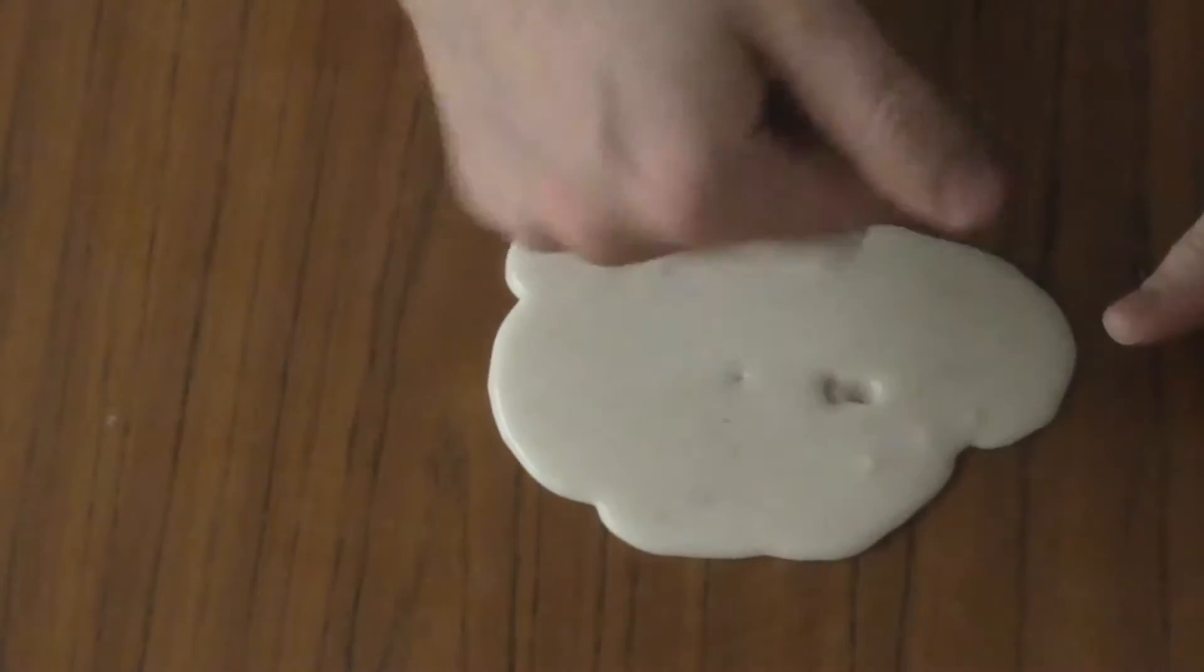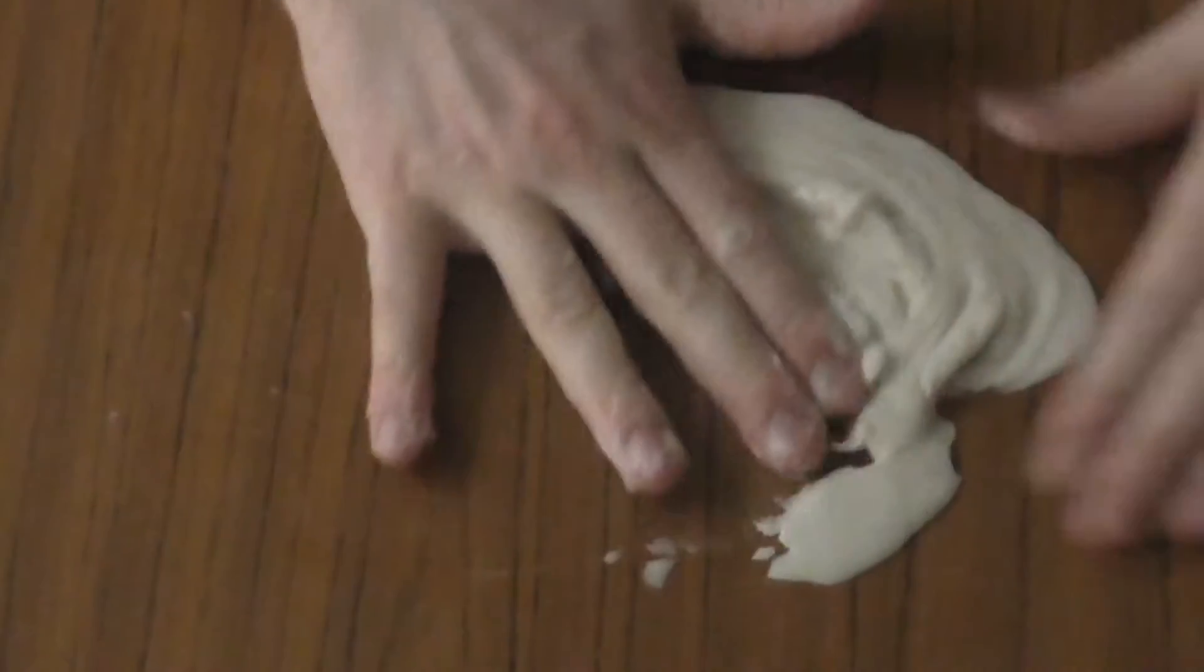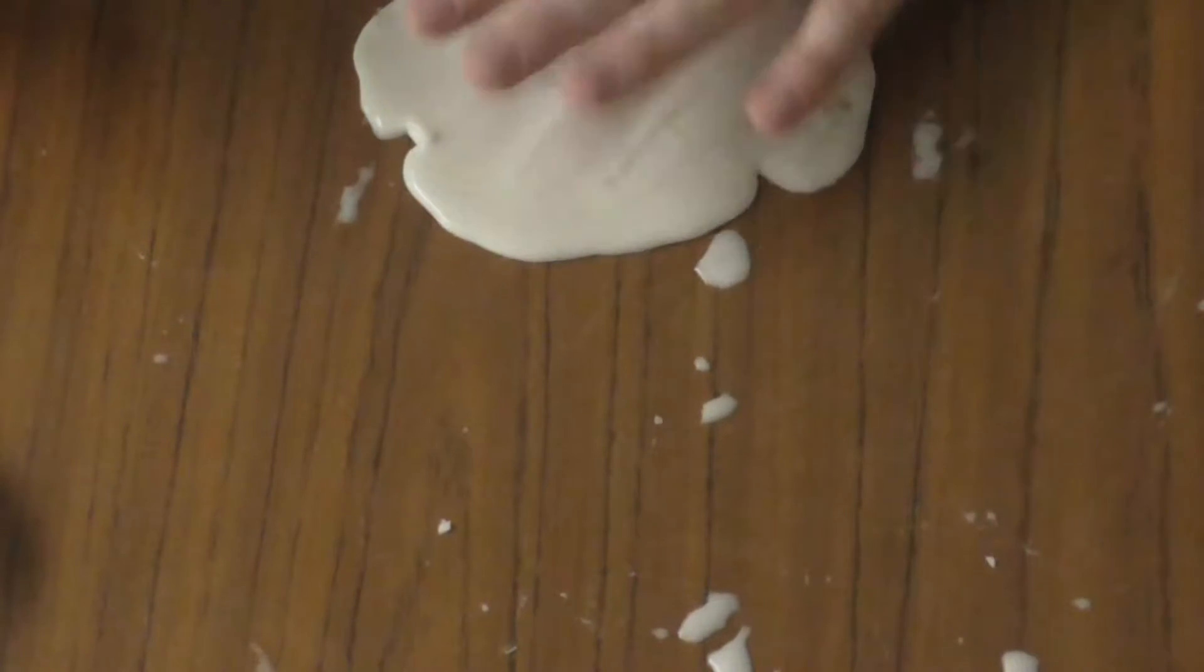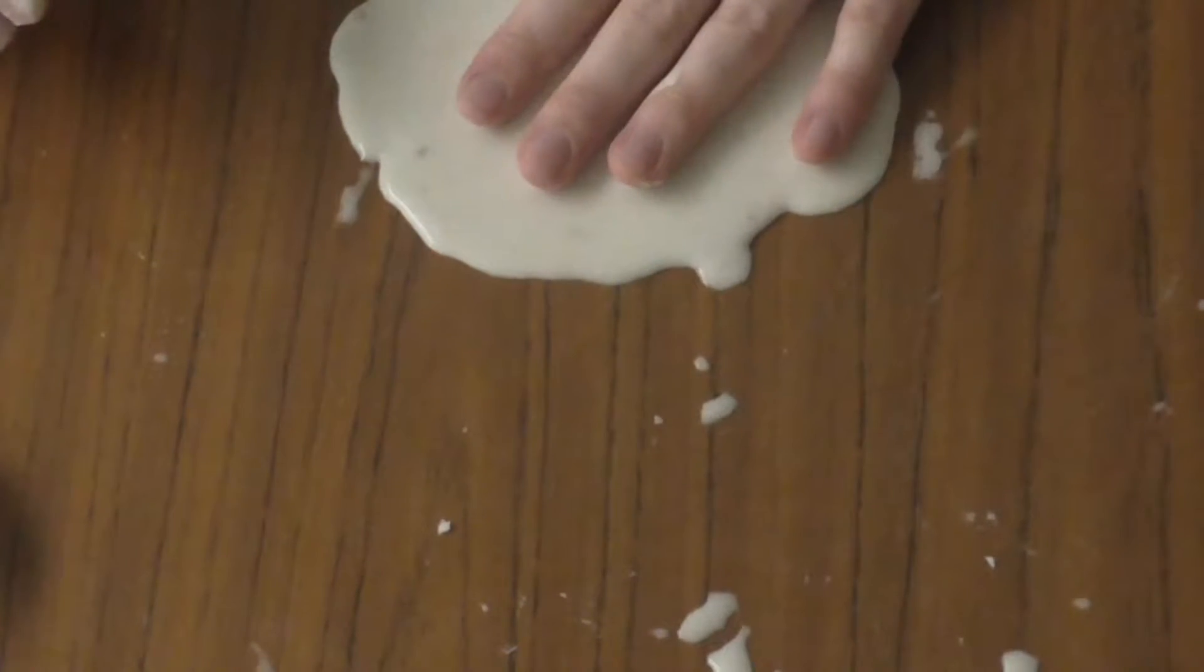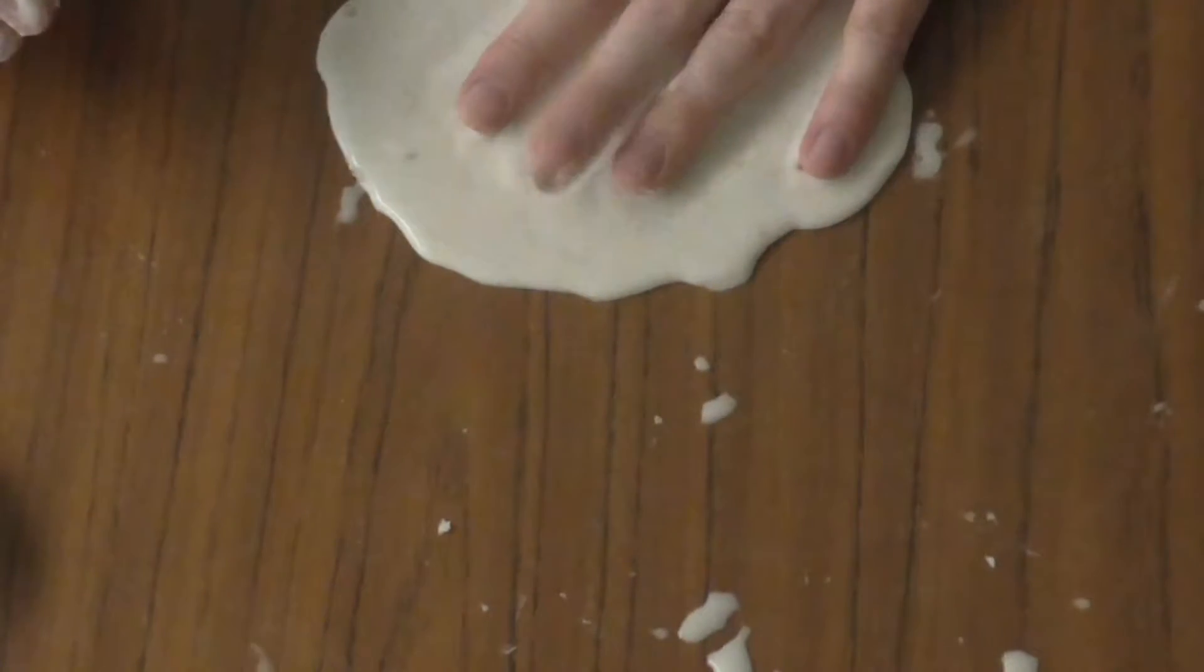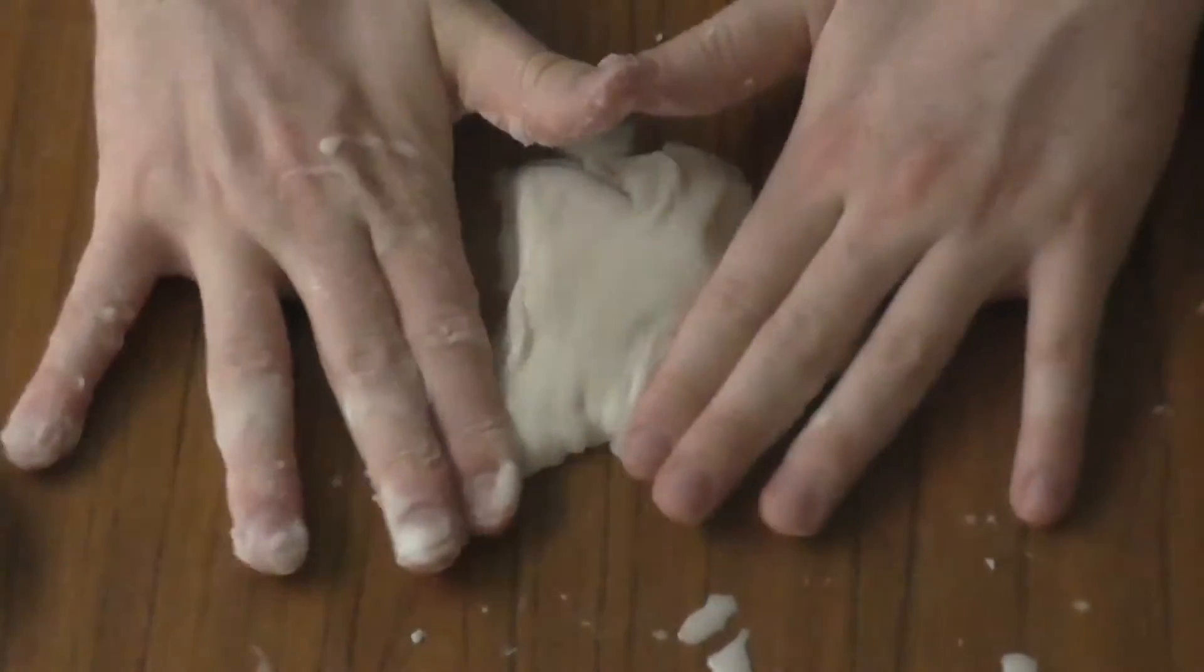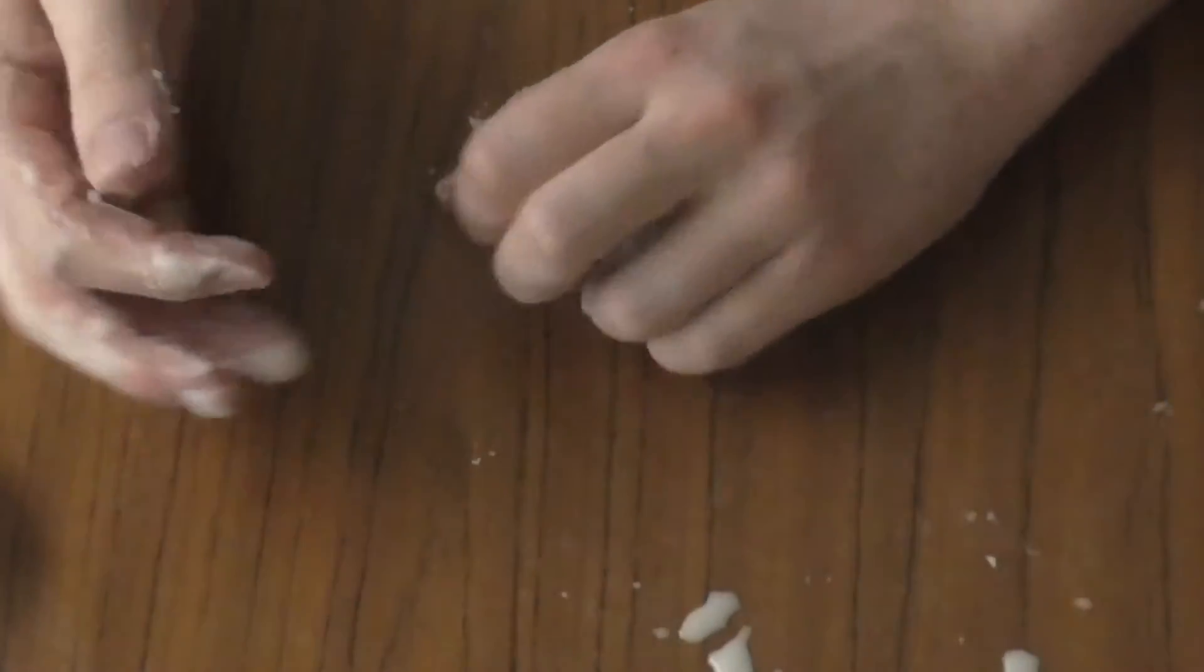It actually is a potato starch and water suspension and that is a shear thickening dilatant substance. So that means that the apparent viscosity increases with the increased stress. So the viscosity is increasing when the shear rate increases.